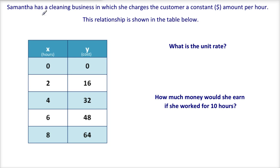Samantha has a cleaning business in which she charges the customer a constant dollar amount per hour. This relationship is shown in the table below. And they ask, what is the unit rate? So in other words, we want to know the cost per hour. So notice that cost is the y variable, so that goes on the top of the fraction, and then hour is on the bottom. So how much does it cost for one hour of cleaning?